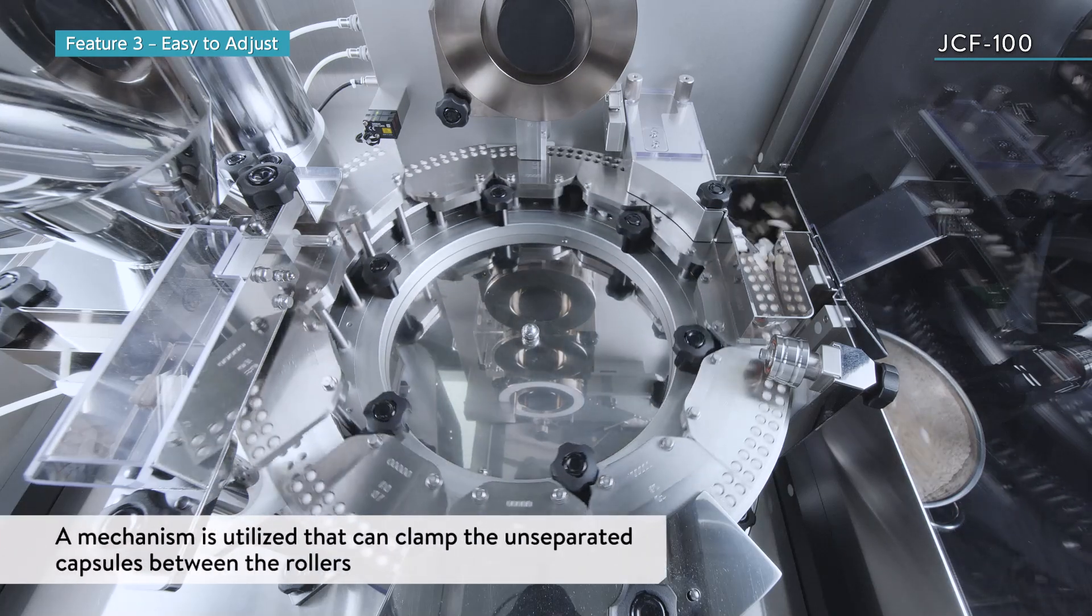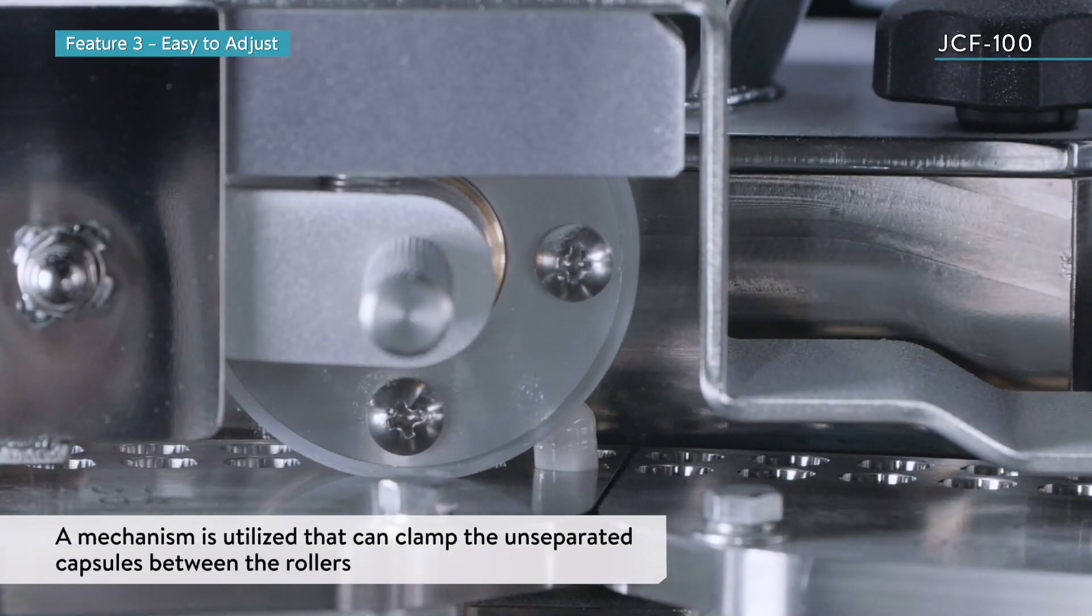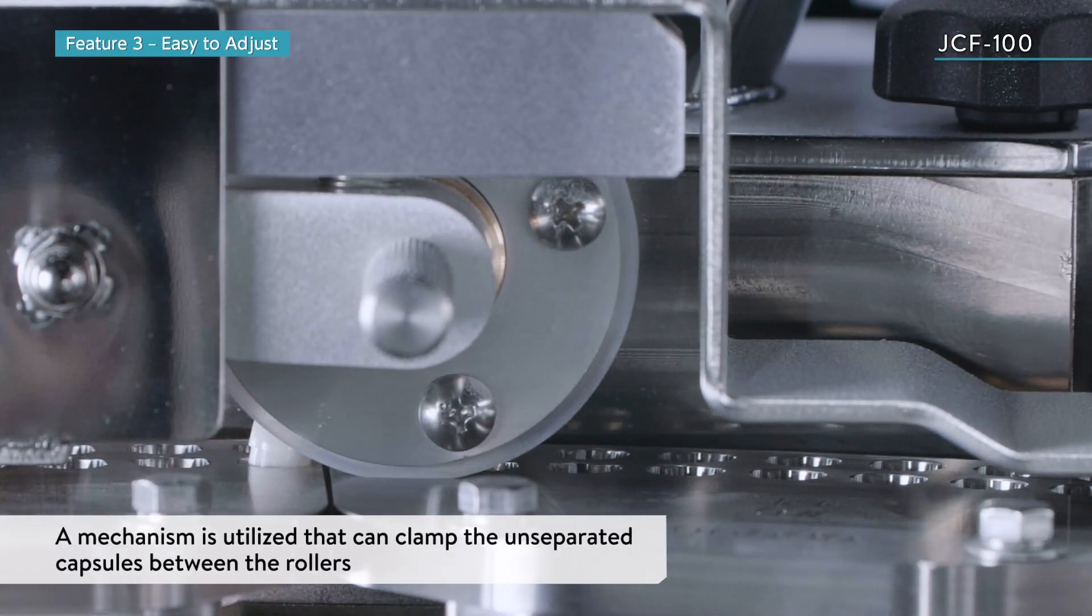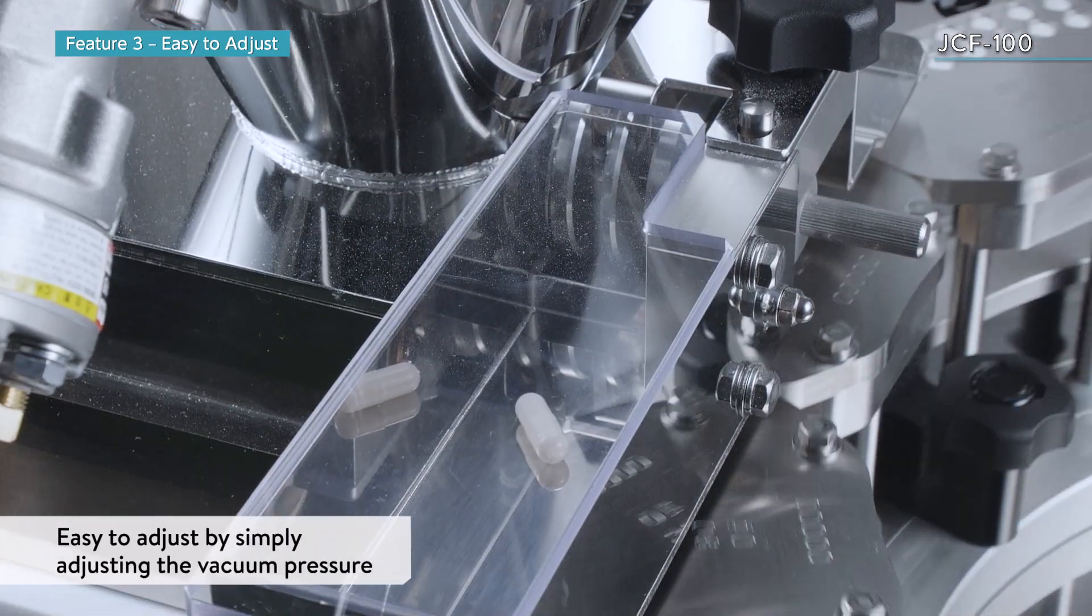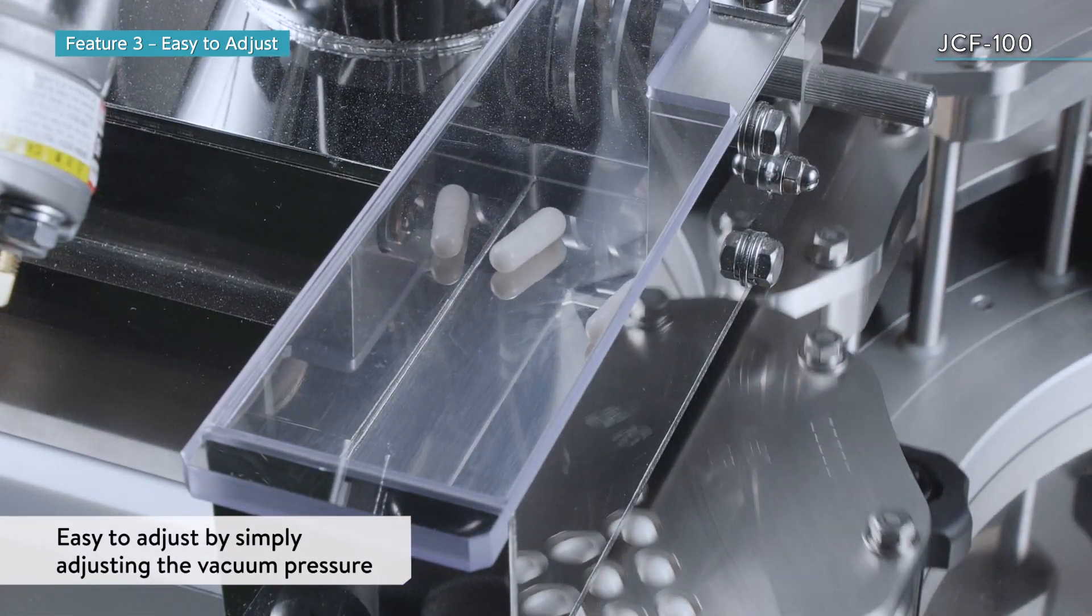The JCF-100 utilizes a mechanism that can remove the unseparated capsules by clamping them between the rollers. This ensures that defective products can be removed with simple adjustments, even during high-speed operation.